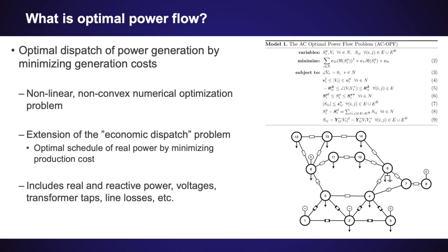This was an extension of the traditional economic dispatch problem, which is essentially to minimize only the economic costs for the delivery of real power in a network, whereas the OPF problem includes many additional physical parameters such as both real and reactive power, voltages, transformer parameters, line losses, etc.